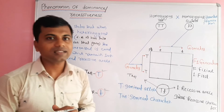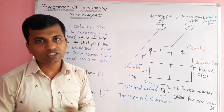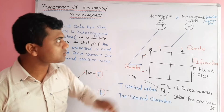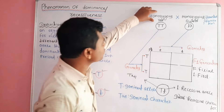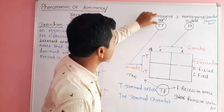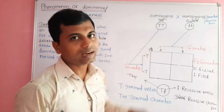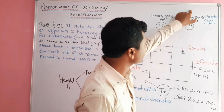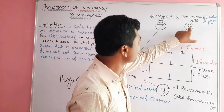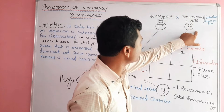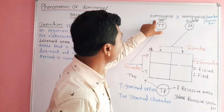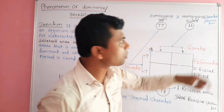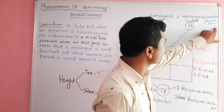In his monohybrid cross, Mendel crossed two pea plants: one is homozygous tall, having genotype capital T capital T, and another is homozygous dwarf, having genotype small t small t. Here, the tall and dwarf plants form the parental generation.